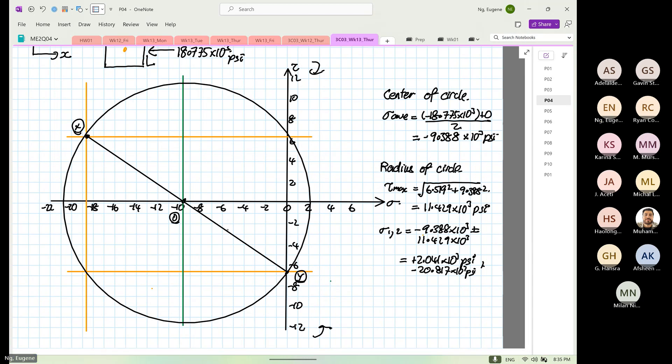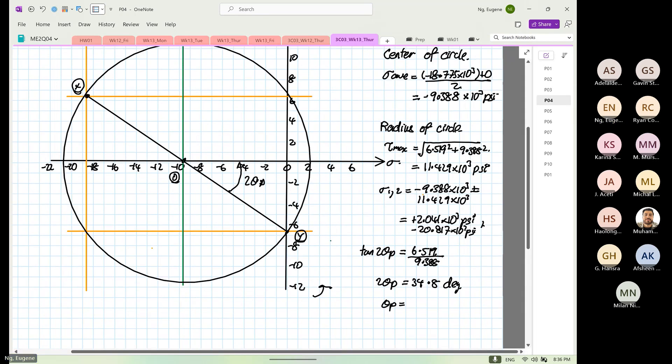So from here, we want to calculate our 2 theta P. So tangent 2 theta P is equal to the shear, which is equal to 6.519, divided by 9.388. Inverse tangent is 34.8 degrees, and theta P is equal to 17.4 degrees. 17.4 degrees can be anticlockwise from X and from point Y.